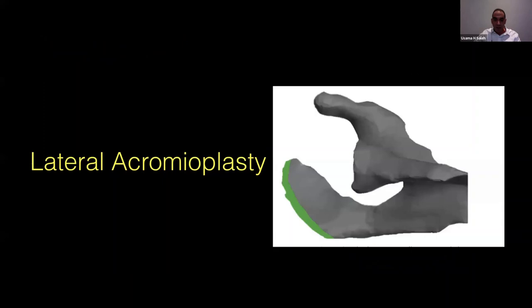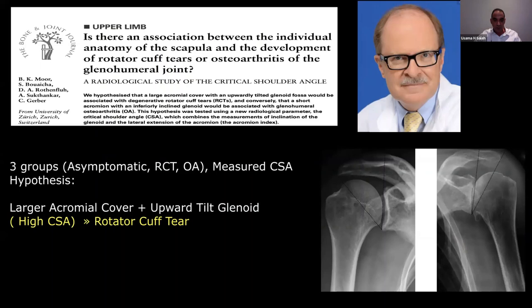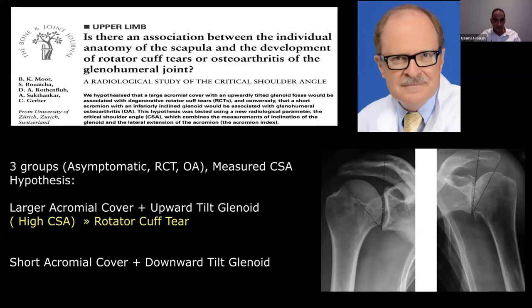Now, what about lateral acromioplasty? This is a new trend. The story started in 2012 when Christian Gerber looked at two groups — patients with rotator cuff tendinopathy and tear, and patients with osteoarthritis — and compared them to an asymptomatic normal population. He found that in patients with rotator cuff tear, there is large acromial coverage and upward tilting of the glenoid. He measured an angle between these two lines and called it the critical shoulder angle, finding that a high critical shoulder angle is associated with a high tendency to develop rotator cuff pathology, while a low angle is associated with glenohumeral osteoarthritis.